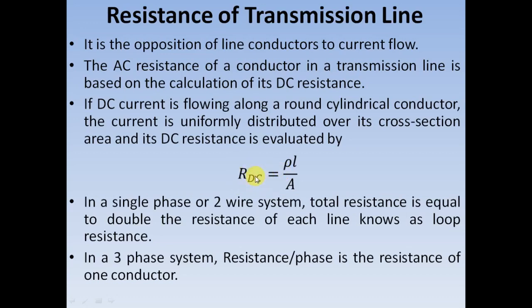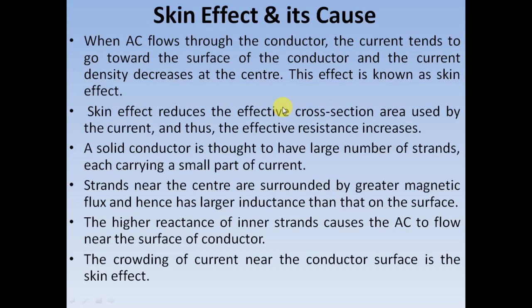This DC resistance value is not the same as that of the AC resistance value. It's due to the phenomenon known as skin effect. Whenever AC current flows through a conductor, the AC current tends to concentrate around the outer surface of the conductor rather than at the center. So the current density at the center gets reduced, and this particular phenomenon is known as skin effect.